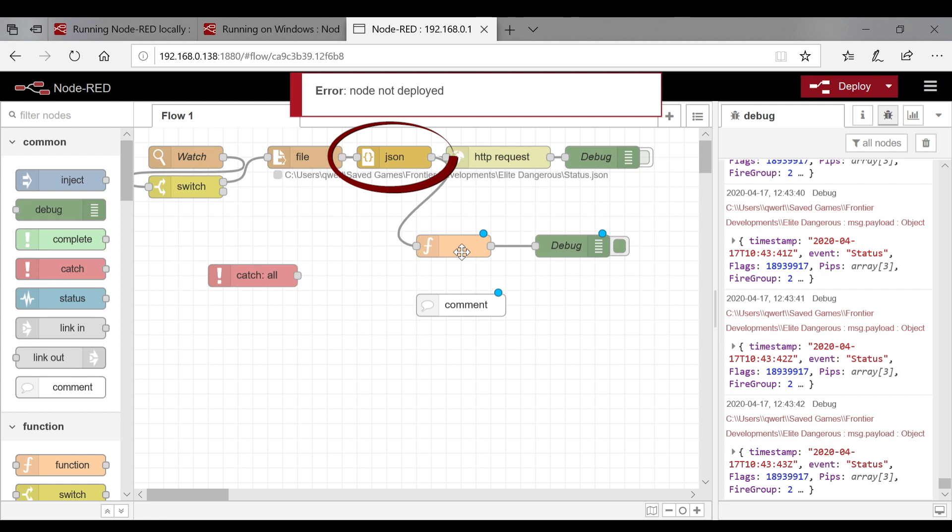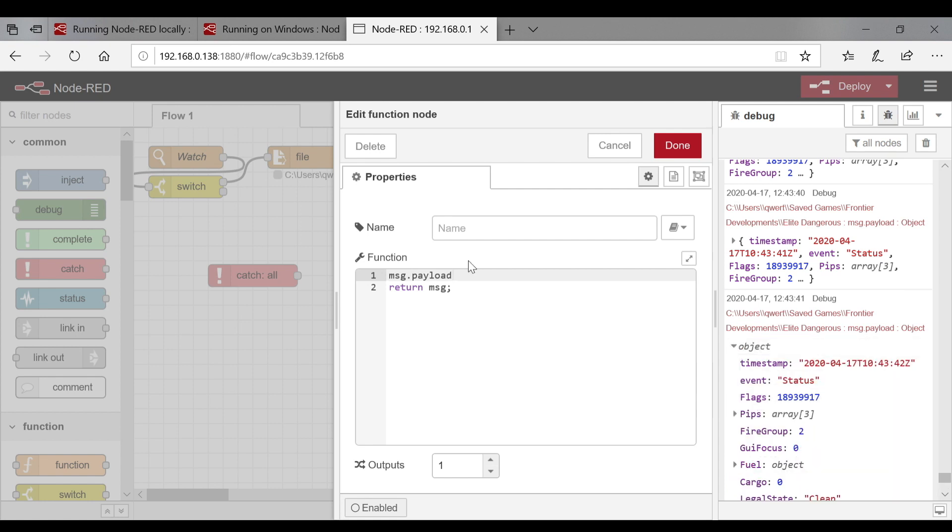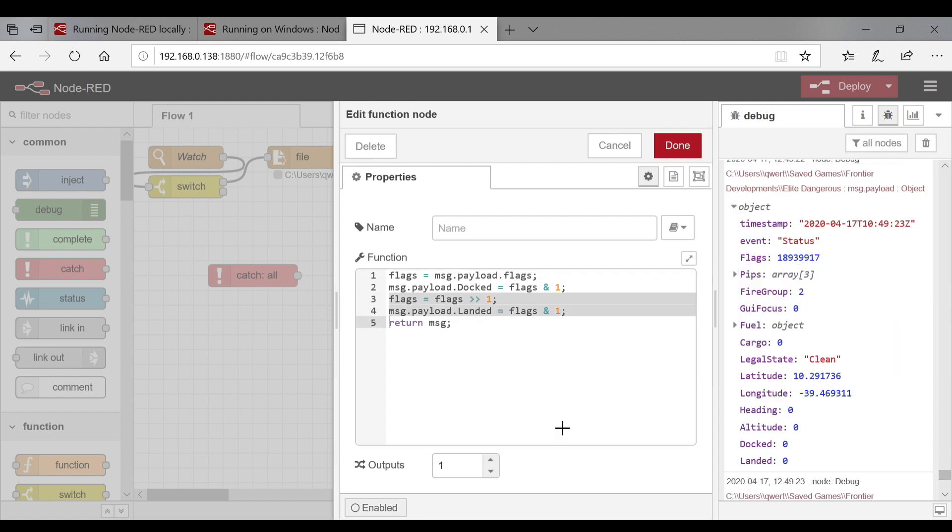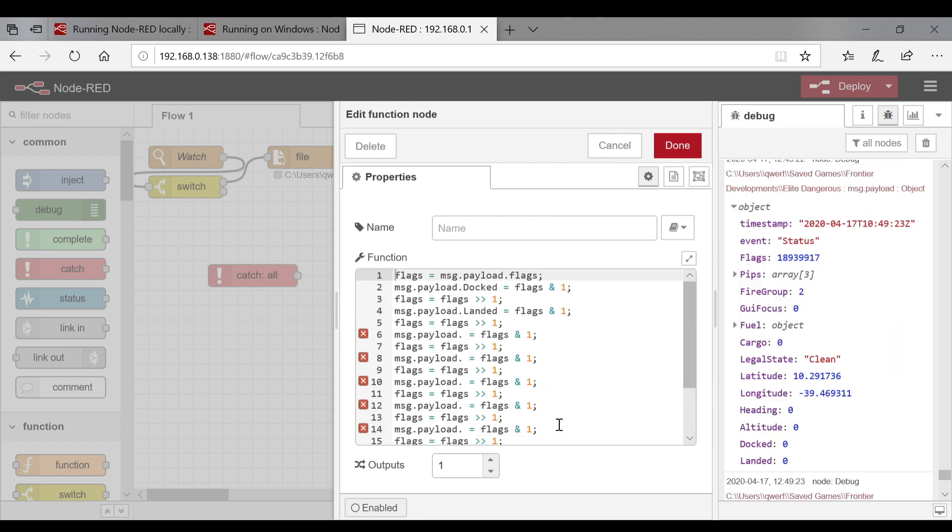This node interprets the JSON and turns it into a JavaScript object. Nodes can either be pre-made, such as the watch, the file, and the JSON node above, or it can contain JavaScript code. In this case, I need to manually tweak the JSON a bit to get all the information that I need, and that is what's happening in the block that I'm writing now.